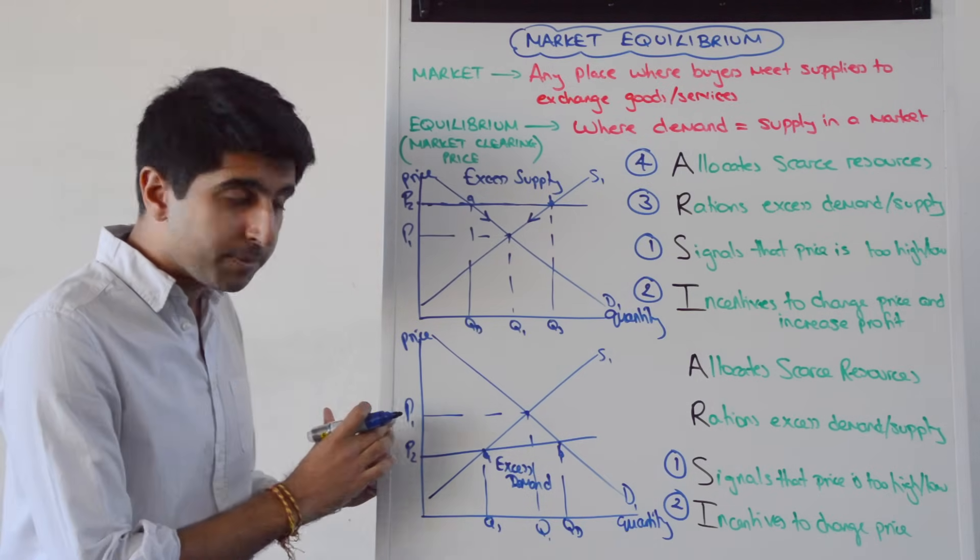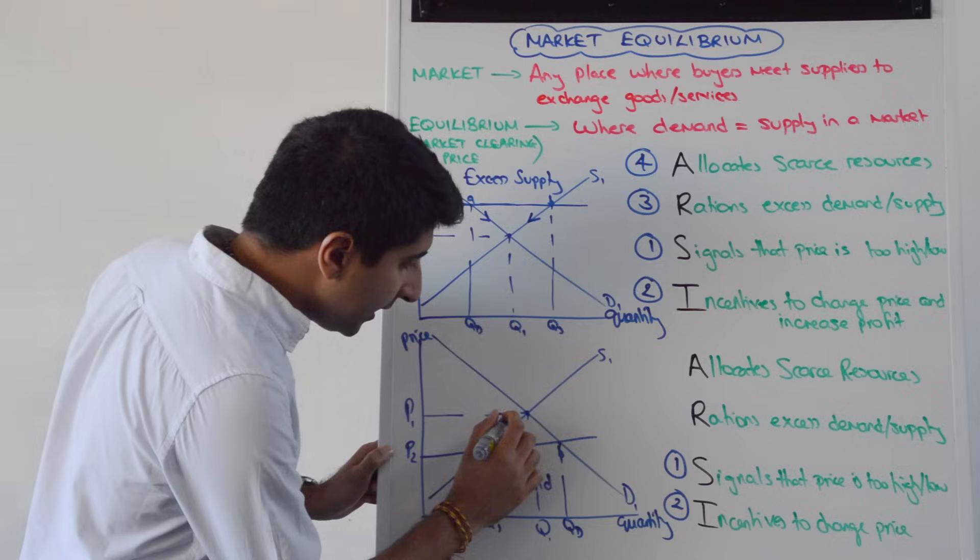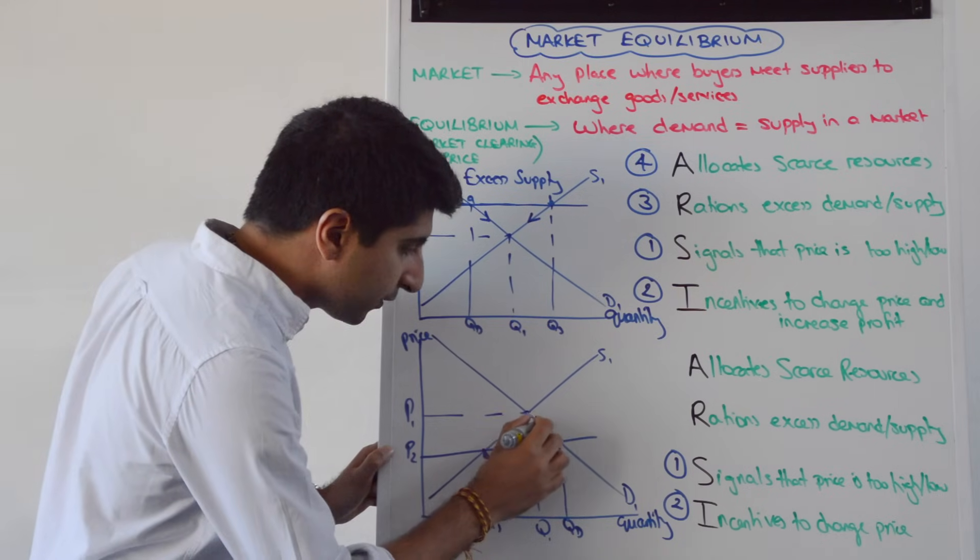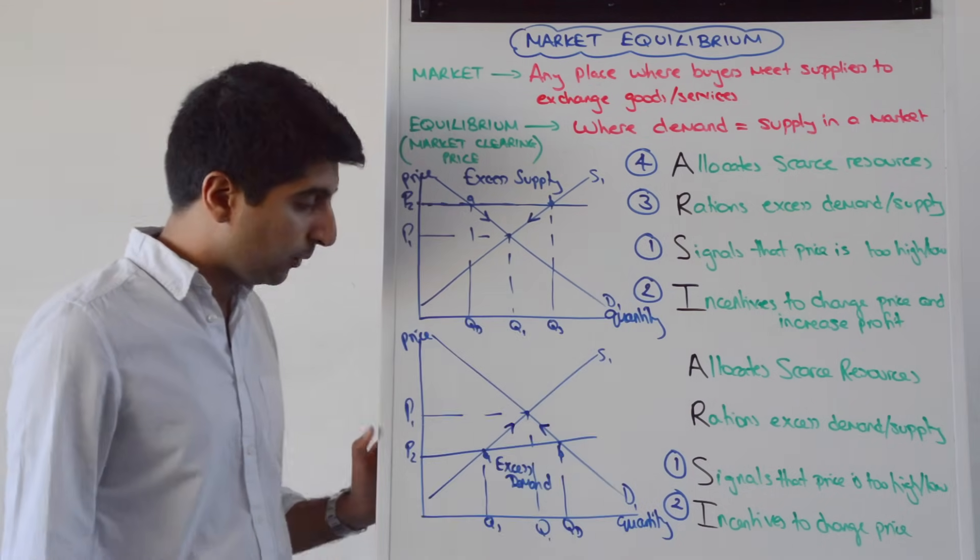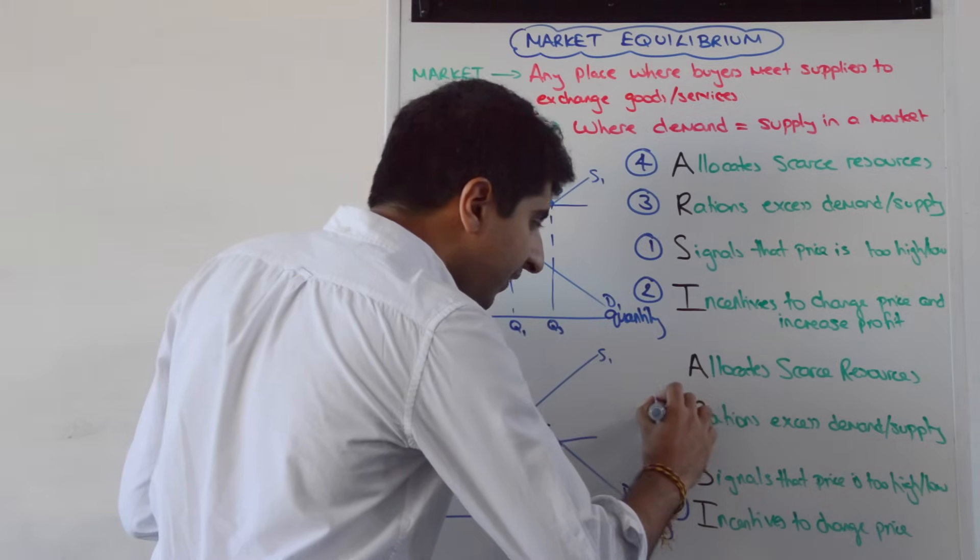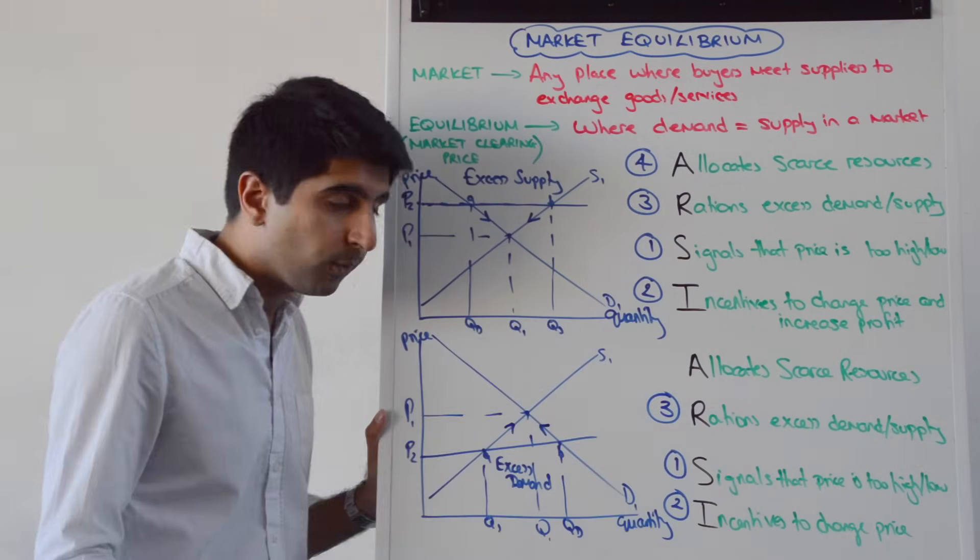If that happens, so from P2 to P1 the price is raised, you can see that there is now an extension of supply and a contraction of demand. And we end up at P1, which means that the excess demand has been rationed away.